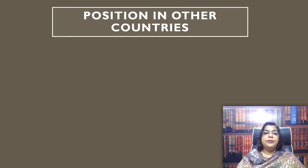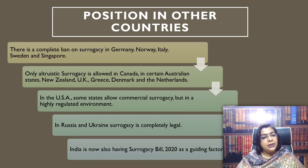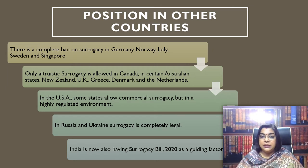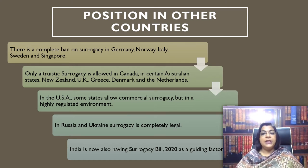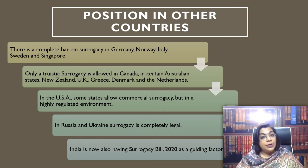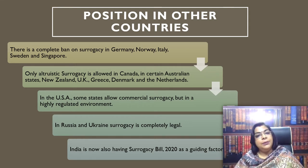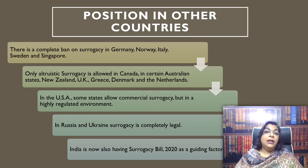Let's look at the position of surrogacy in other countries. As far as Germany, Norway, Italy, Sweden and Singapore are concerned, it is completely banned. Altruistic surrogacy is allowed in Canada, certain Australian states, New Zealand, UK, Greece, Denmark and the Netherlands. In the USA, some states allow commercial surrogacy in a highly regulated environment, and in Russia and Ukraine it is completely legal. In India, the Surrogacy Bill 2020 allows altruistic surrogacy but has banned commercial surrogacy.